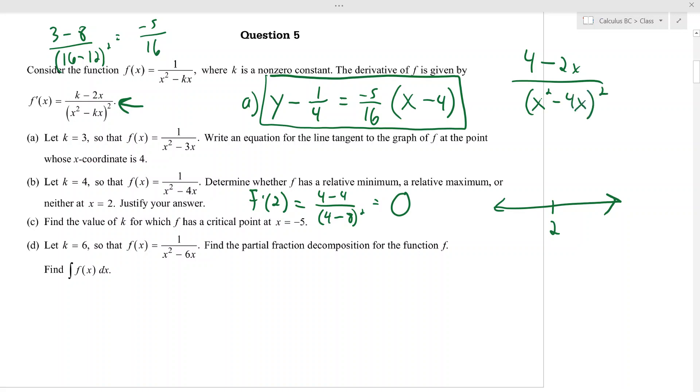If you plug 0 into that, you get undefined, so you can't even plug 0 into that. If you plug 1 into that, you get 2 over a positive number, so you get a positive. And if you plug 3 into that, you get a negative over a positive. So 2 is a relative max, and this is justified. So we're going to say that there is a relative max at x equals 2 since f prime of x changes—